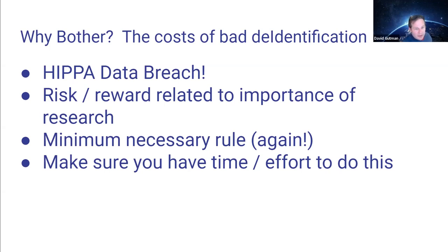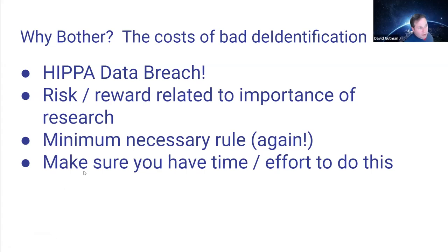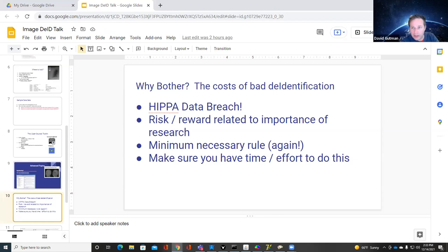There's also this minimum necessary rule — what do you actually need to share in order to make it useful? Very few people get famous de-identifying data, so you have to make sure you have the time and effort to do this right. You really don't want to rush through this, because explaining to your IRB board why you accidentally released a couple hundred people's names would be bad.